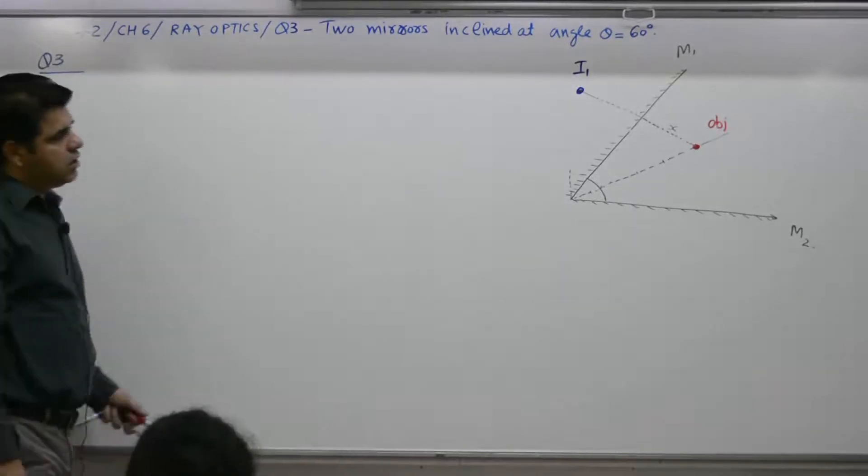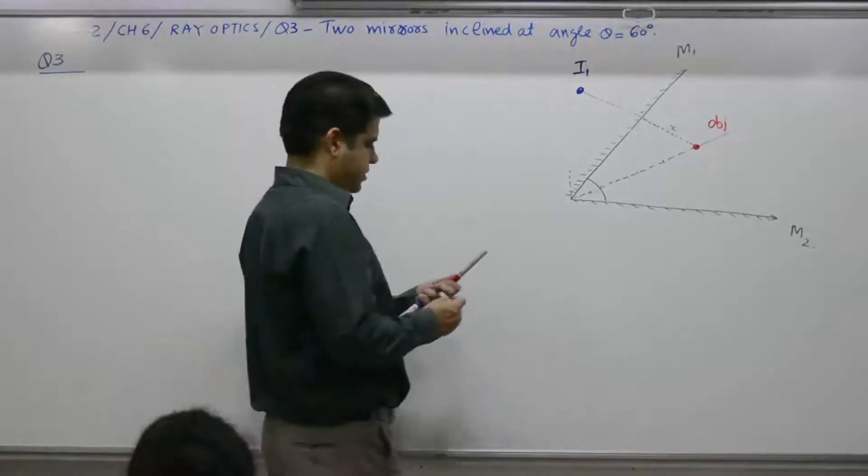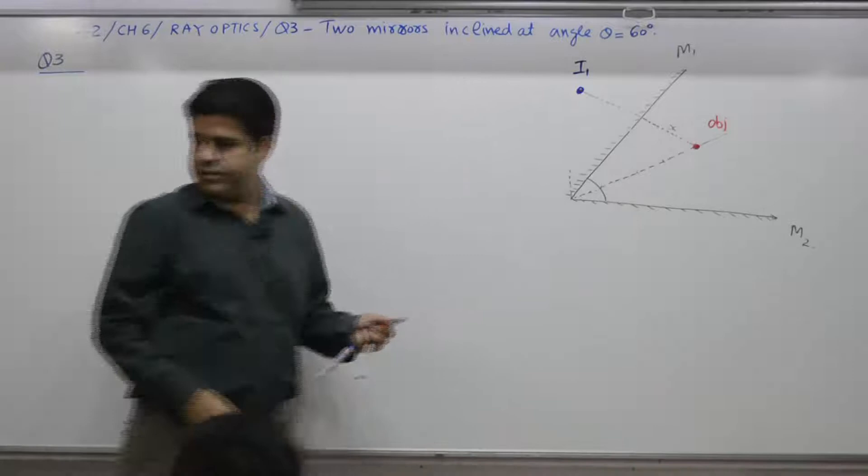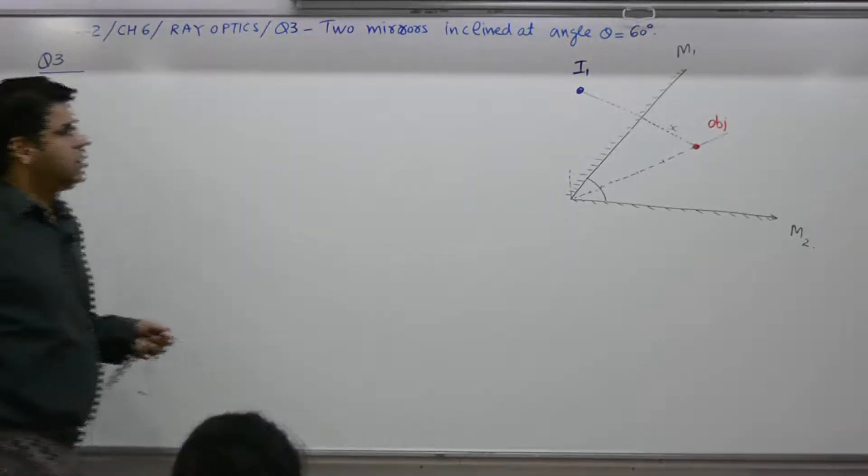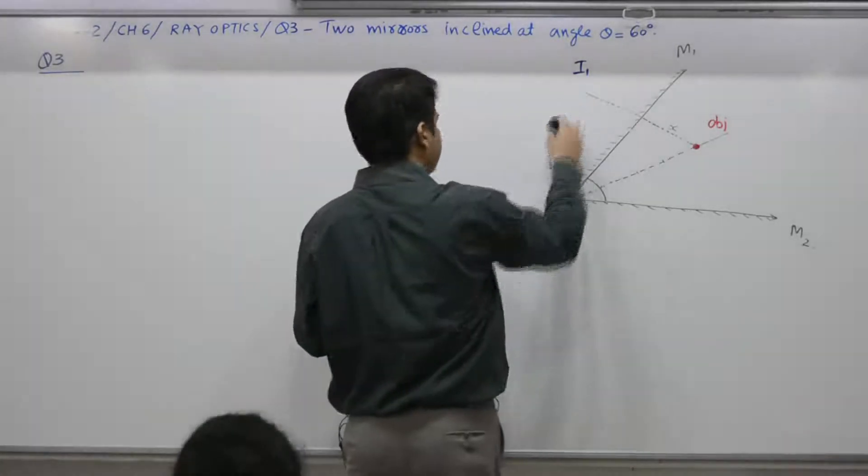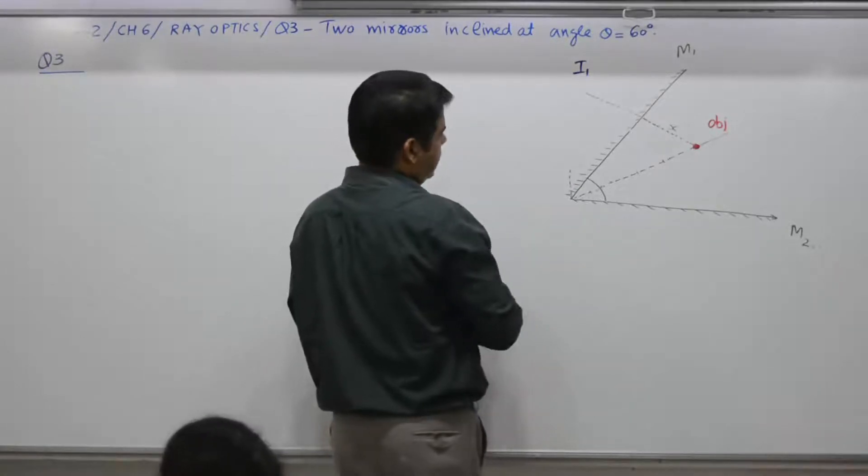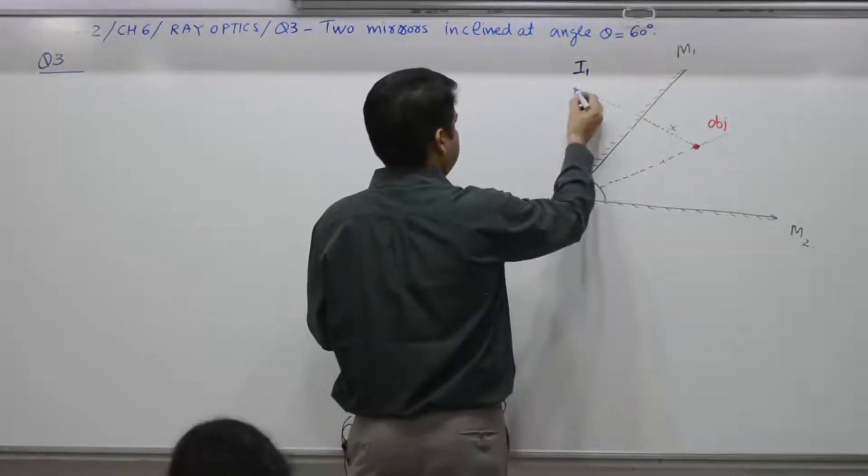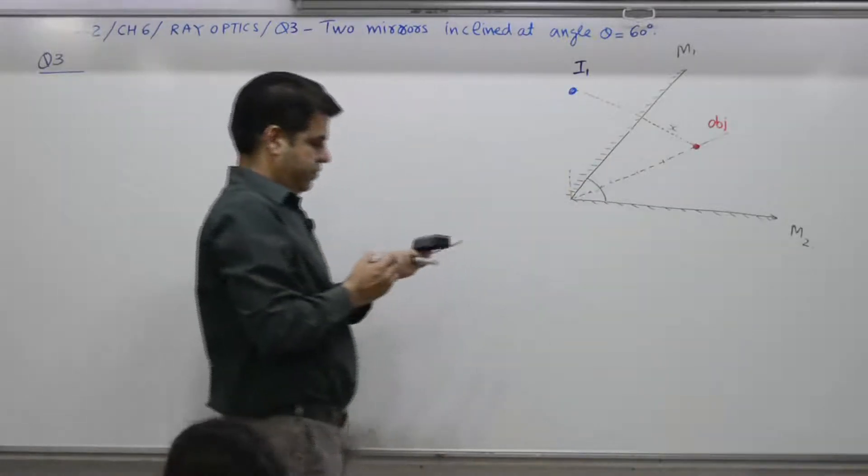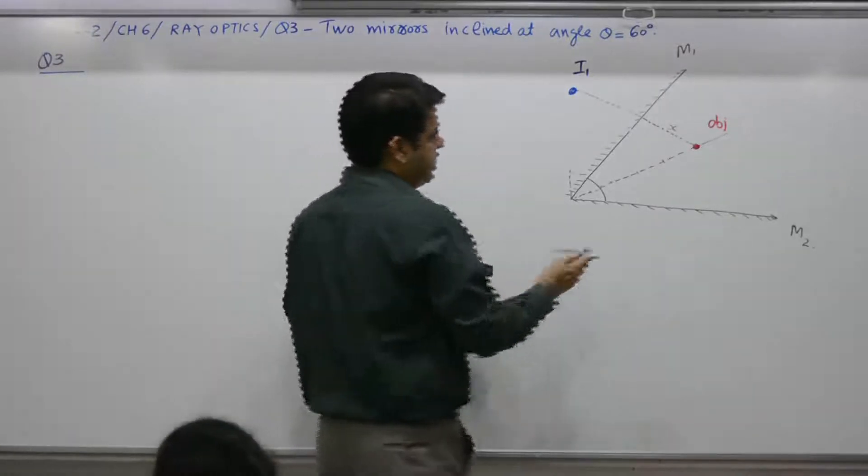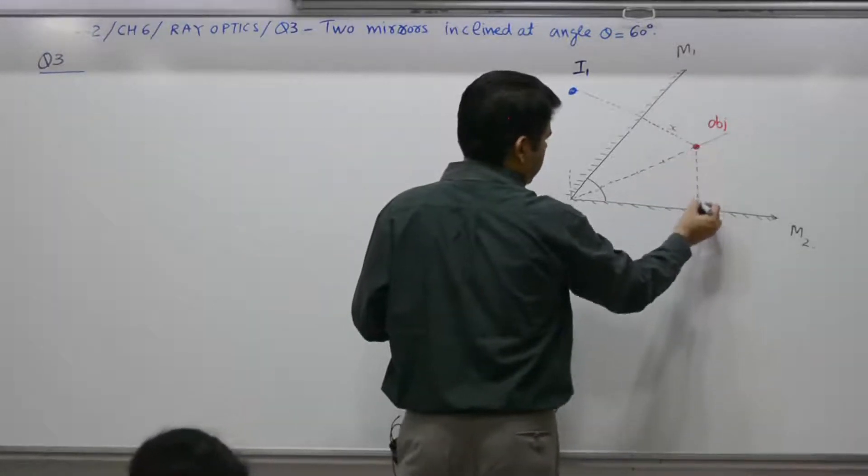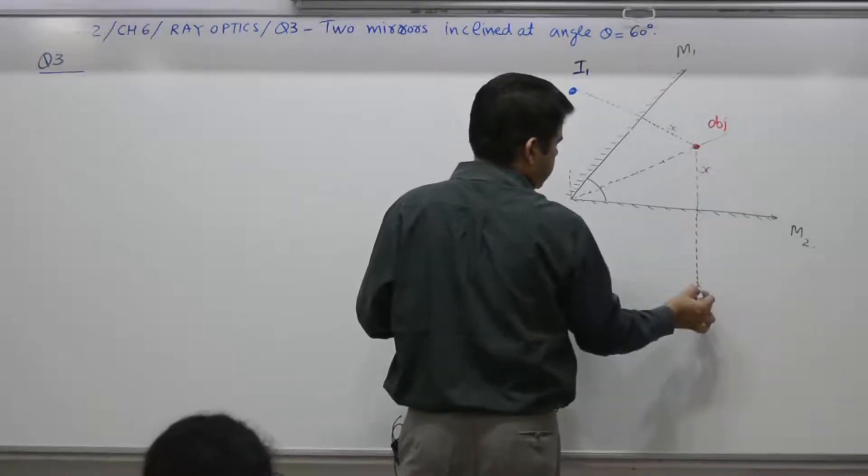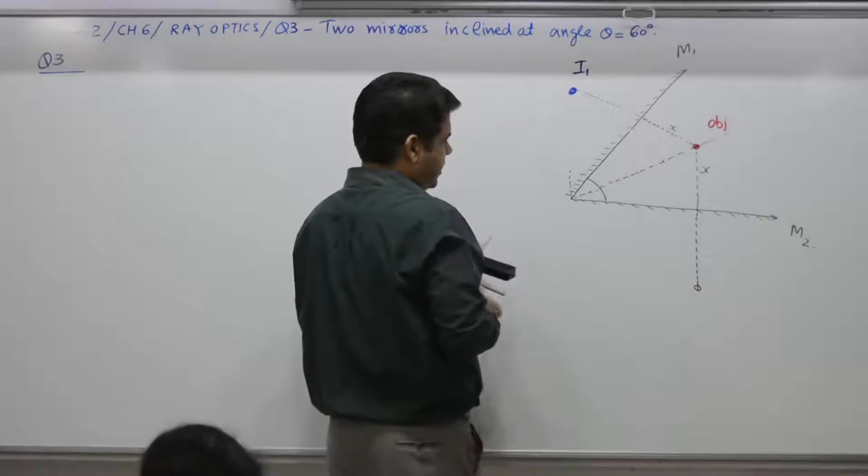How do you draw the second one? Yes. If you draw it to scale, you will find it somewhere here. Because it is placed asymmetrically, you will find when you draw it to scale you will find this to be somewhere here. What about this one? Yes. Again you drop a perpendicular, this distance X. You will find these two distances are equal. Image formed here is I2.